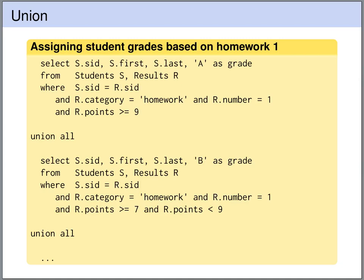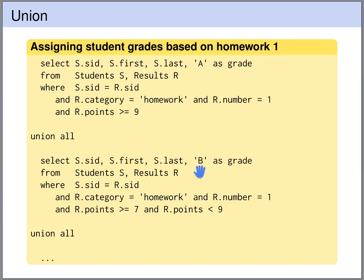This illustrates the use of the union operation for a kind of case distinction. We are using the union operation to assign grades to students based on the homework 1 result. In each of the queries we join the students and results table on the student ID, look only at homework 1 results, and filter students that have obtained a certain number of points. In the first query we look at students with at least 9 points and assign grade A. The second query looks at students with less than 9 and at least 7 points, assigning grade B.